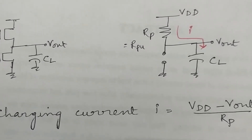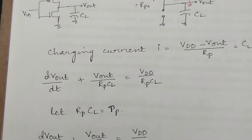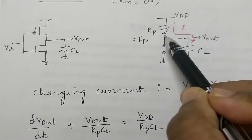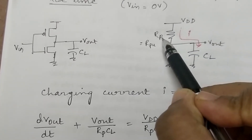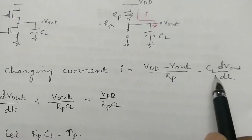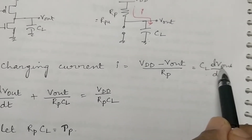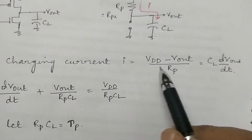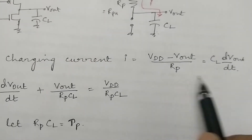The charging current is given by I = (VDD − Vout) / RP. Because the same current flows through the capacitor charging it, we can also write I = CL · dVout/dt. So the equation becomes: (VDD − Vout) / RP = CL · dVout/dt.